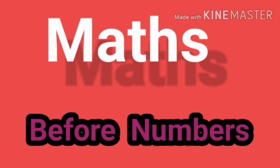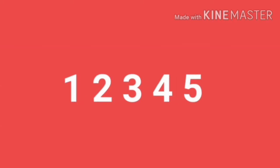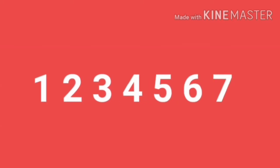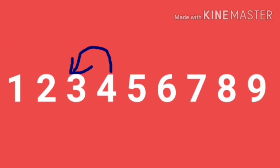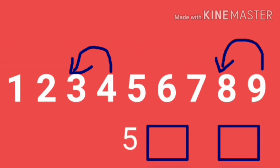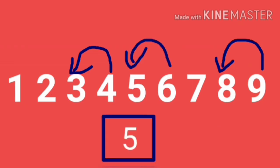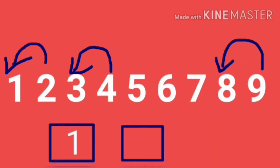Before numbers means in counting numbers the number previous to it is the before number. For example, in the following sequence of 1, 2, 3, 4, 5, 6, 7, 8, 9: 3 is before number of 4. 8 is before number of 9. 5 is before number of 6. 1 is before number of 2.